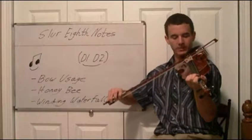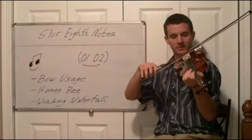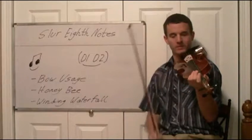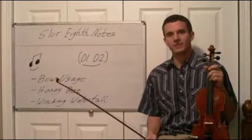So if I slur two eighth notes together it's gonna sound like this. So I didn't use quite the whole bow and then back the other way. So up and down is gonna sound like this. So I just slurred four eighth notes together.